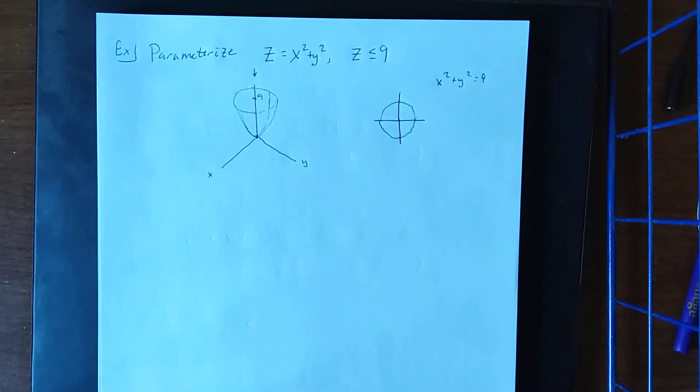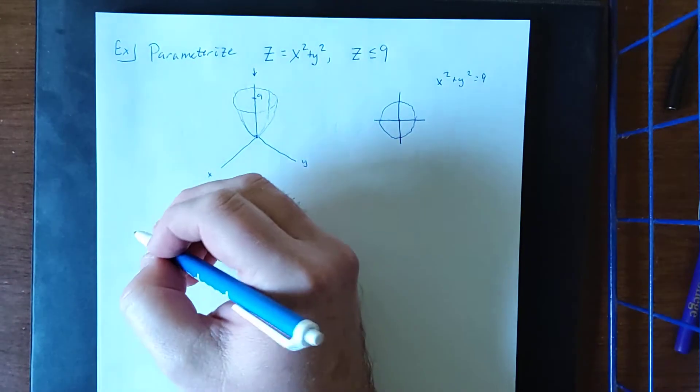Now as is the case for other parametric curves, parameterizations are not necessarily unique. So one possibility.